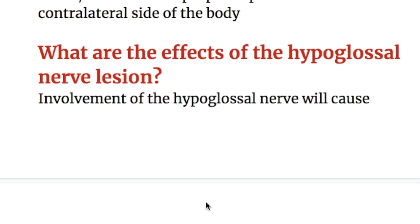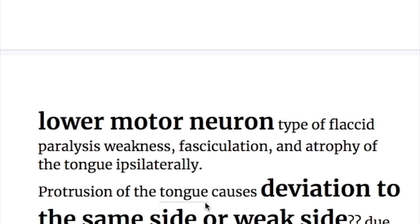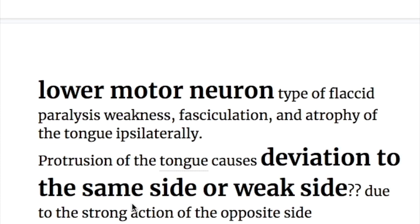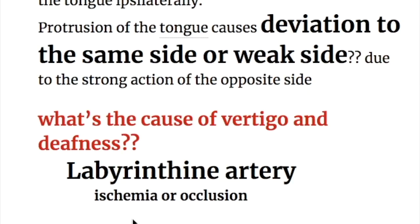Involvement of the hypoglossal nerve causes a lower motor neuron type of flaccid paralysis with weakness, fasciculation, and atrophy of the tongue ipsilaterally. Protrusion of the tongue causes deviation to the same — weak — side, due to the unopposed action of the opposite side. There is no facial abnormality in medial medullary syndrome.